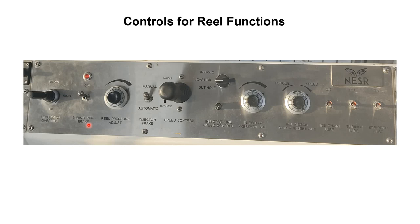Then we have the tubing reel brake — if we want to apply the brake to the CT reel, we can use this knob for application of the brake. Then we have reel pressure adjust, which is the knob for adjusting reel back pressure, or we can say adjusting the reel tension.